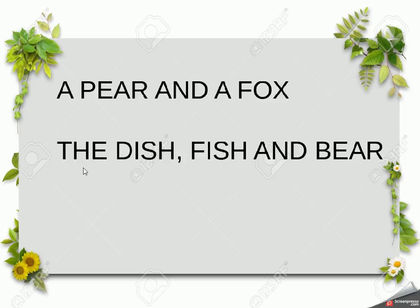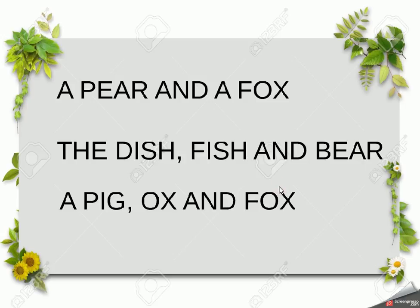Notice this time I've made a list, so I've put a comma in first to separate the first two items, and then before the last item I use 'and' — so it's 'the dish, fish and bear'. And here we've got 'a pig, ox and fox' — again a list where the first two items have been separated by a comma and then the last item is just after an 'and'.